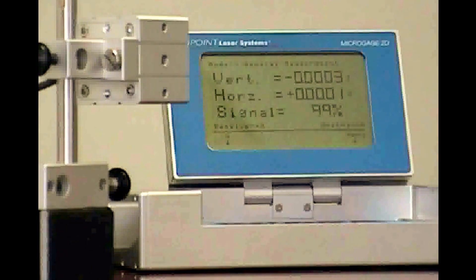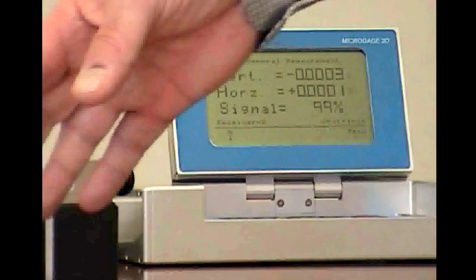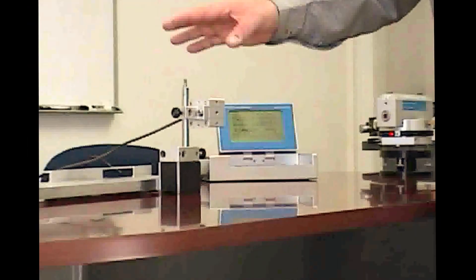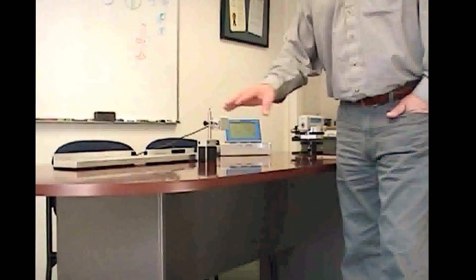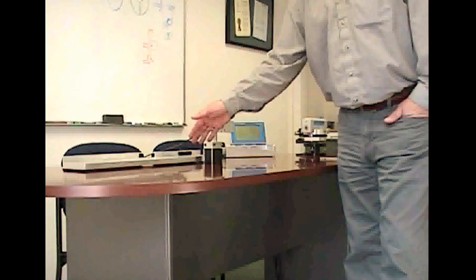Then I can move this receiver unit anywhere along the line and take measurements, and any deviation I have from zero in the horizontal axis will tell me how straight this particular surface is.